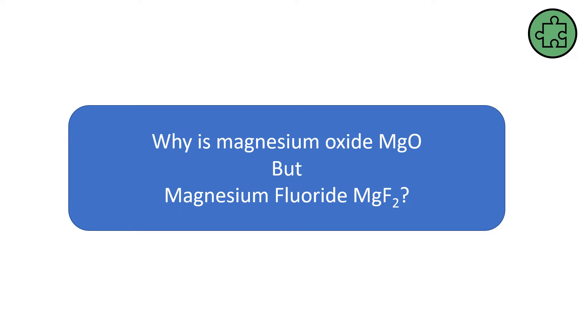So the next section is talking about ionic formulae, trying to understand why magnesium with oxygen is one magnesium and one oxygen, but when we bond magnesium with fluorine it's one magnesium and two fluorines. What's going on?